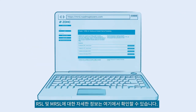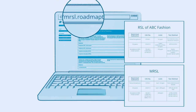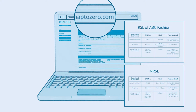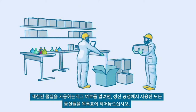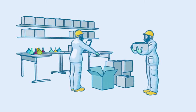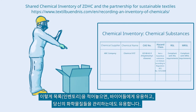You can find more detailed information on RSL and MRSL here. To understand whether you are using any restricted substances in your production, prepare an inventory of all substances in your production process. Such an inventory is not only required by your buyers but also forms the basis for managing chemicals in a systematic way.